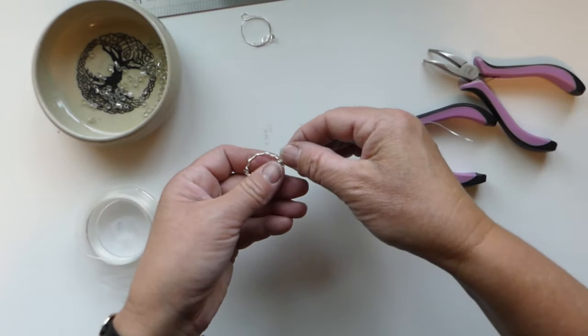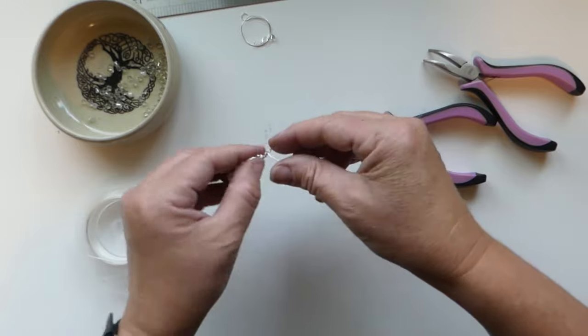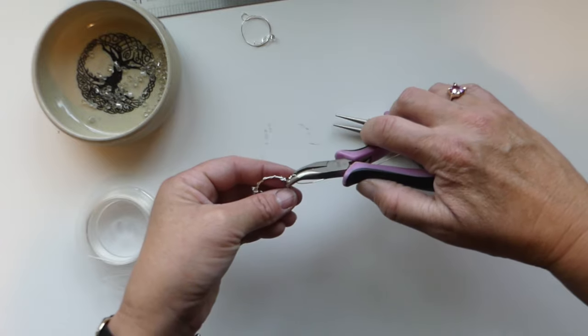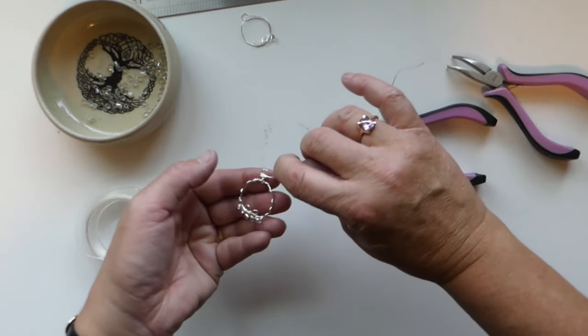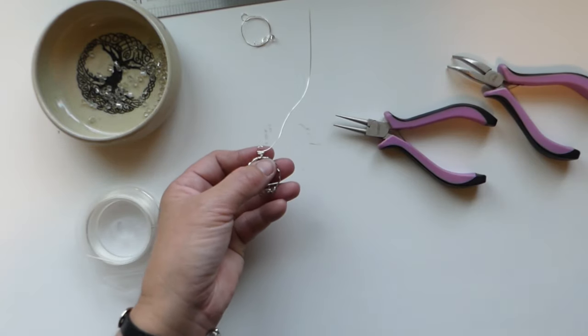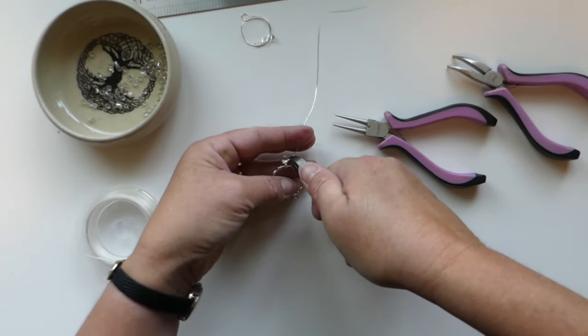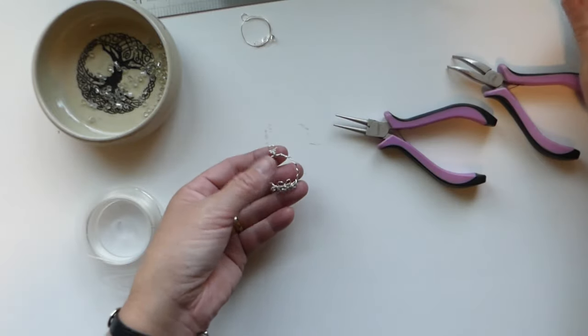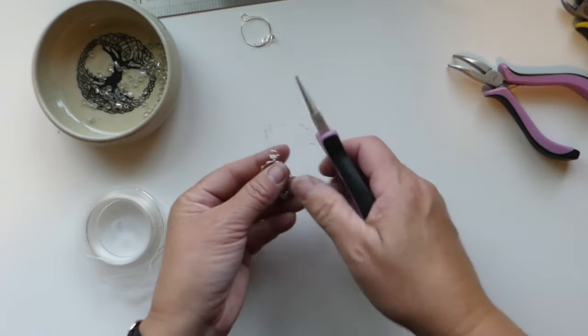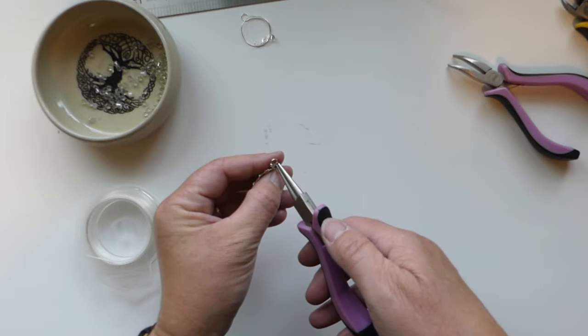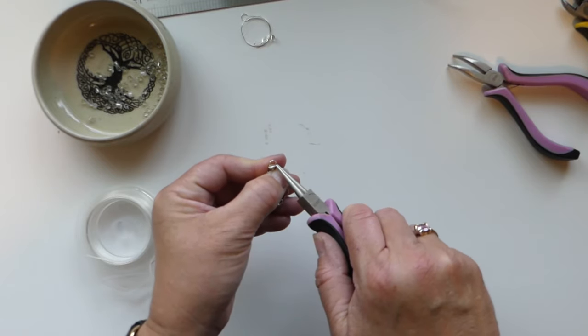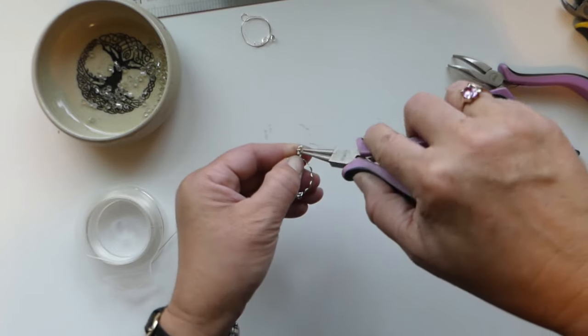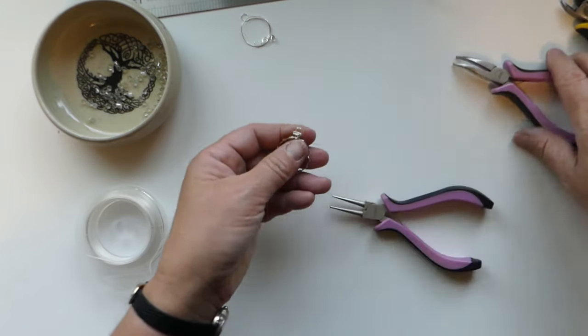And then one more. And then we're going to wrap it all in place. So we had cut 14 inches, so that is a little bit long, but better too much than not enough. So then we're going to take - we're going to bend that wire - we're going to poke it down in that bail.